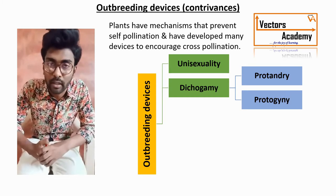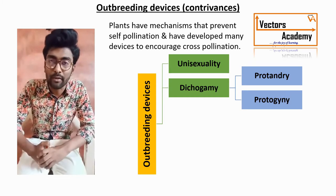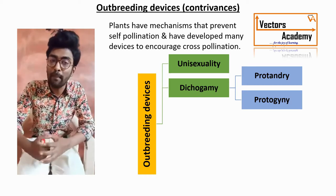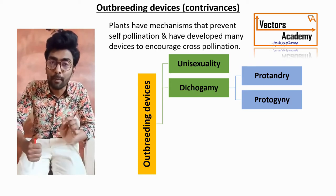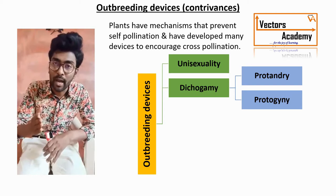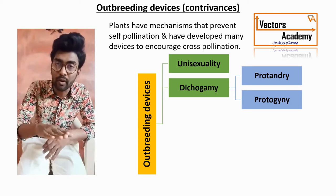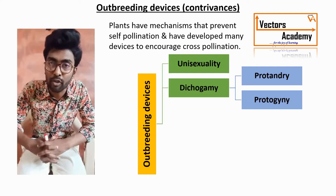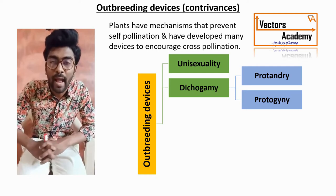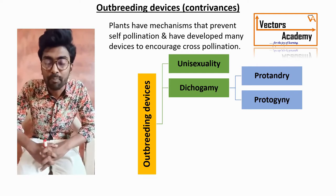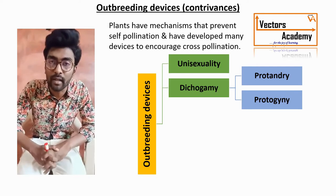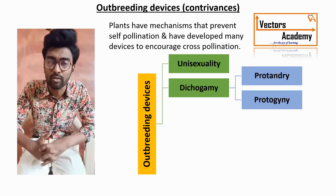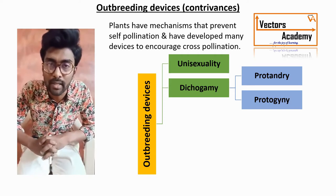The second type is protogyny. 'Proto' stands for first and 'gynae' stands for gynoecium. In protogyny, the maturation of the gynoecium takes place first, followed by the androecium — that is, the stigma matures earlier and is then followed by the anther.